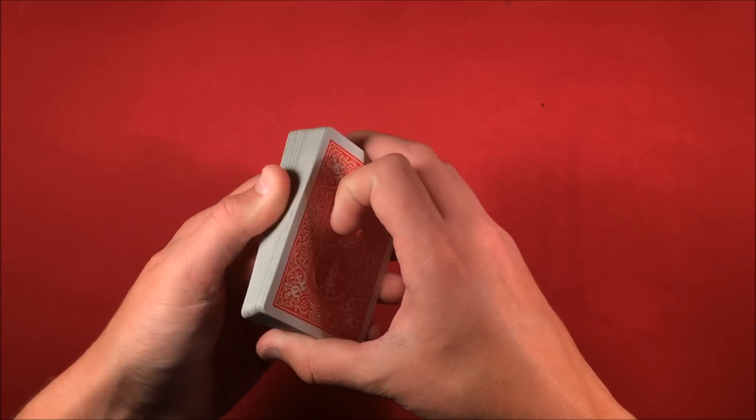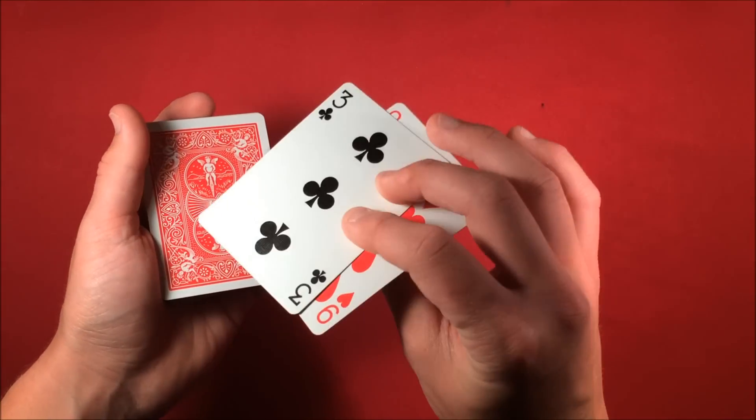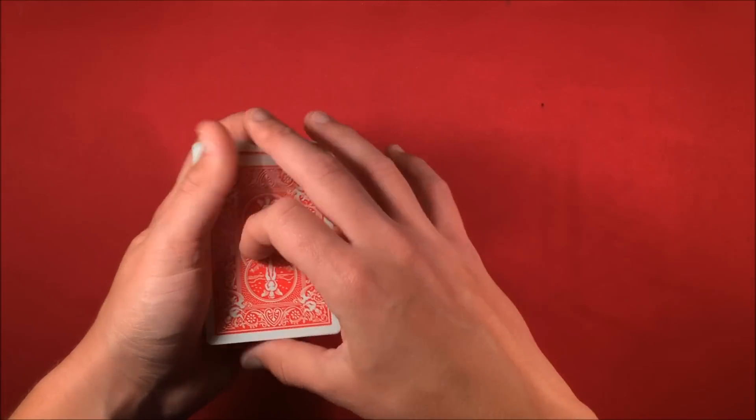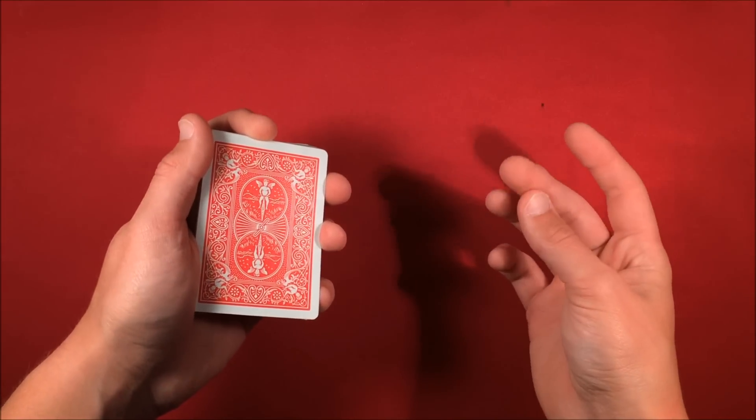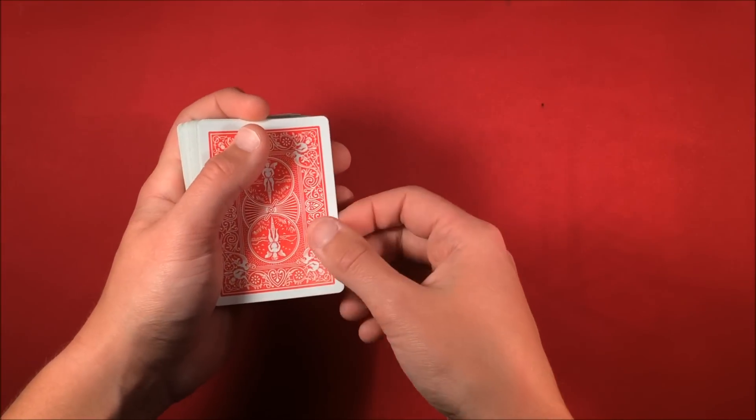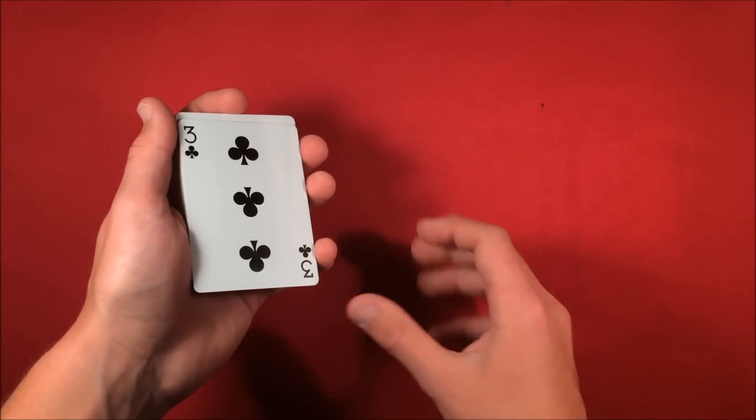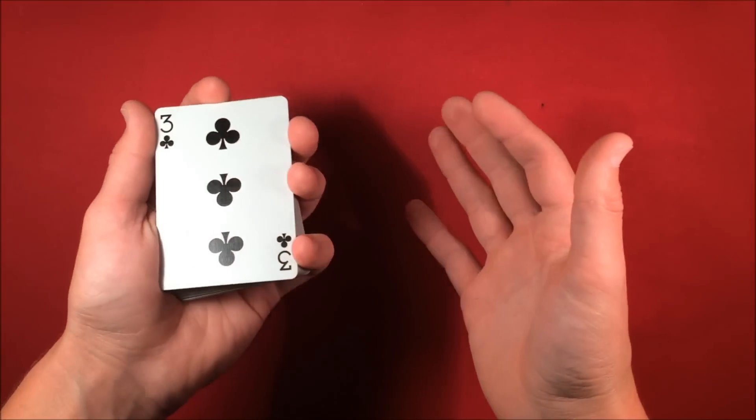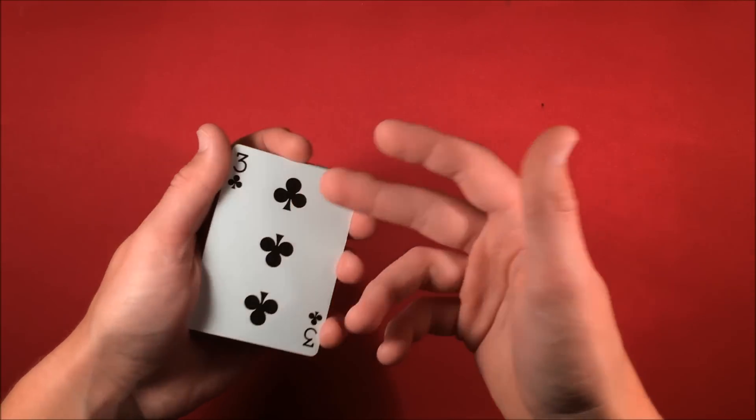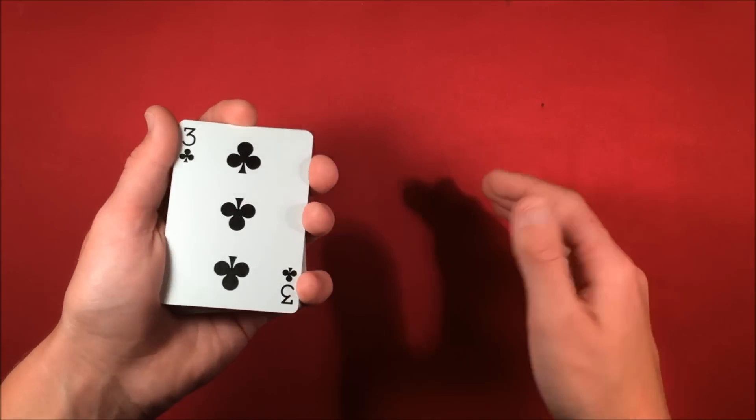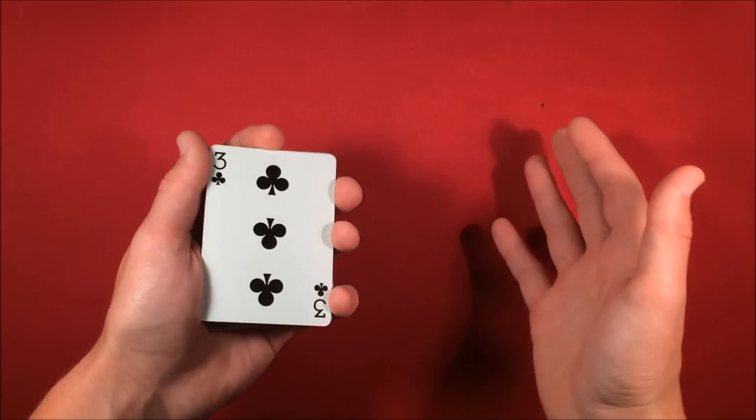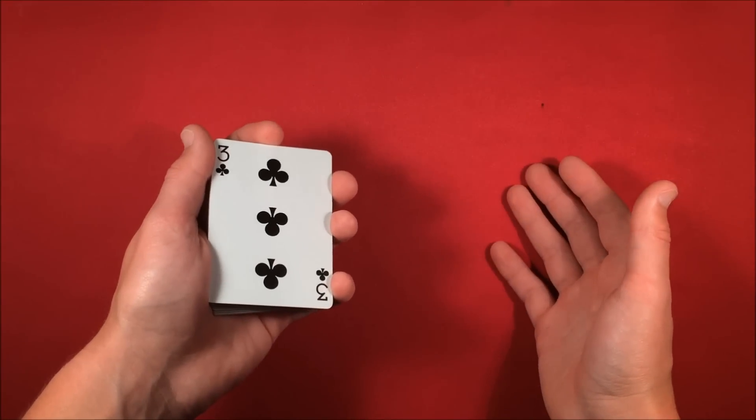At this point you actually have their card second from the top. So from here you can say look, your card's in the middle of the deck, snap my fingers, and then you do a double lift. So it's really simple. And if the spectator has their signature on the card, the trick is even a lot more powerful because obviously there's no way that you could have used a duplicate card.